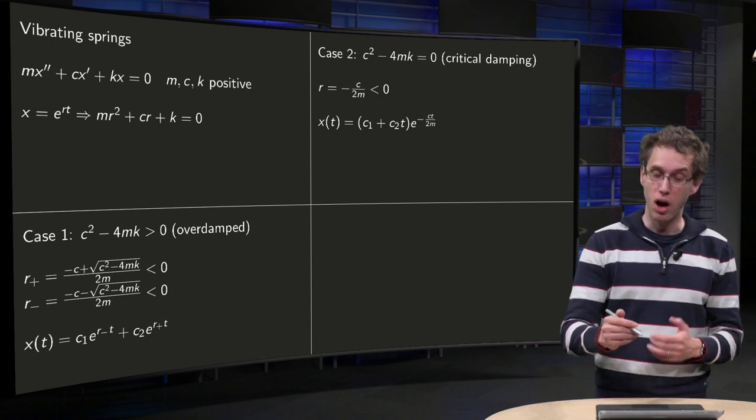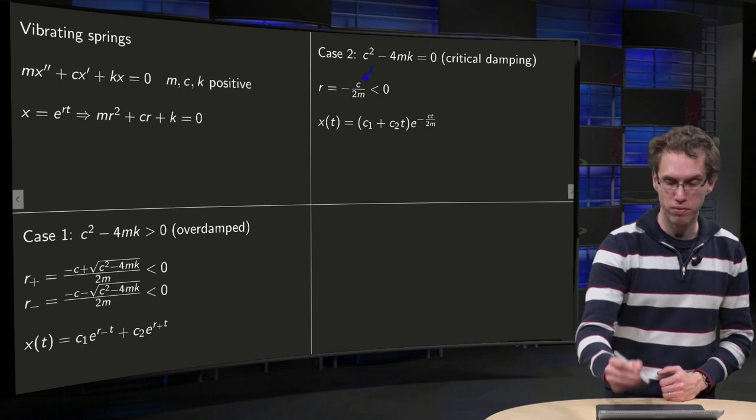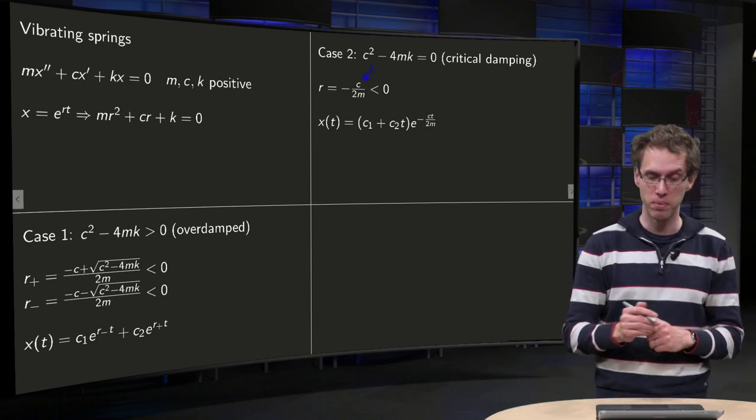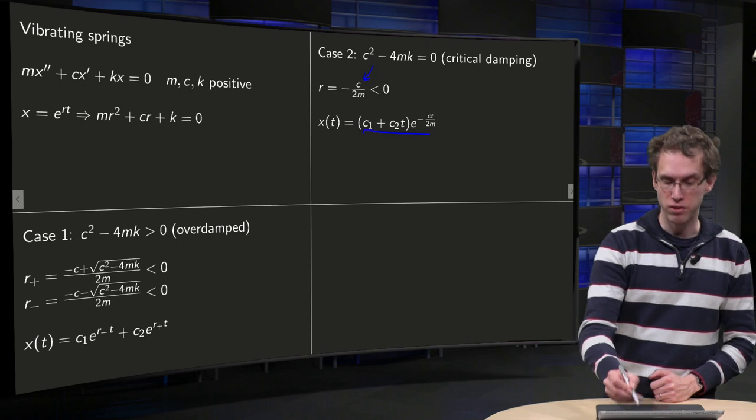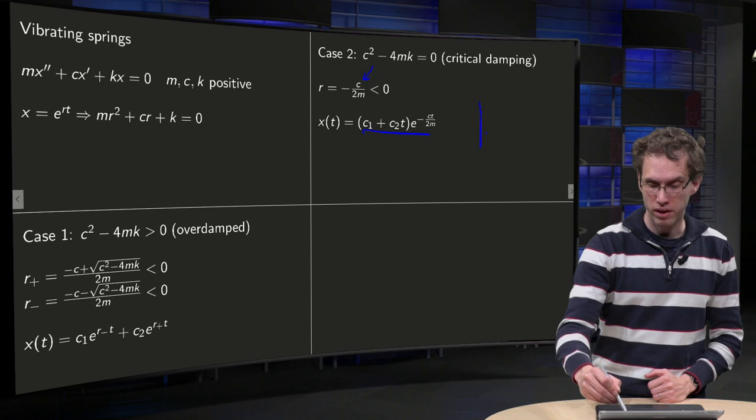And what do we have in that case? Well in that case you use one r because your discriminant equals zero. So you have one negative r minus c over 2m. So your solution x of t looks like this.